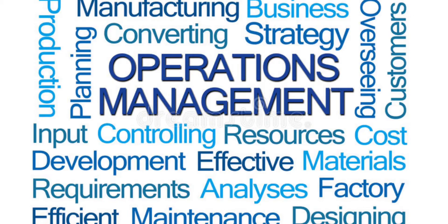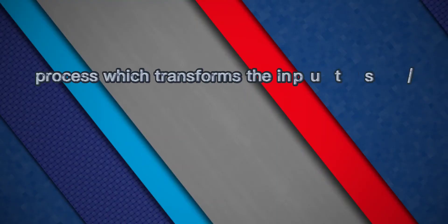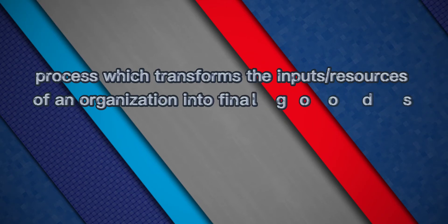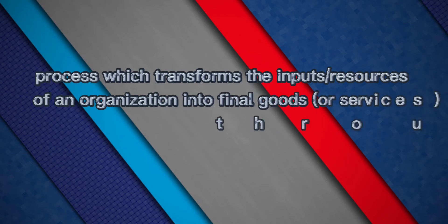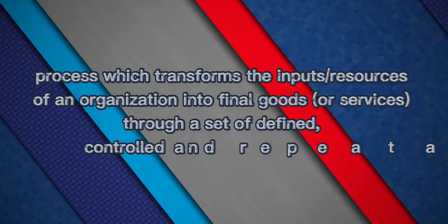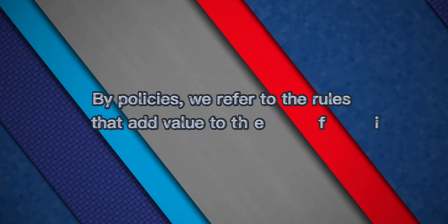The last function is operations and production. It's defined as the process which transforms the inputs or resources of an organization into final goods or services, through a set of defined, controlled, and repeatable policies that add value to the final output.